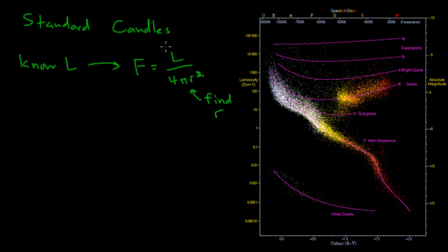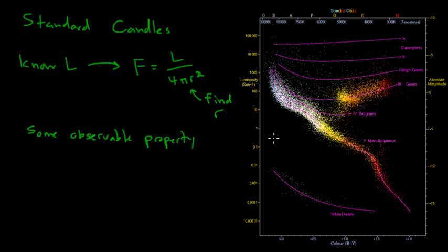So this is the basic method that is used for pretty much all standard candles. We have to start with some sort of observable property — so some observable property. In this case we used the colors of various stars, but we're going to see different examples in the next few videos. We have some property that we can measure from whatever our standard candle is, and we need to be able to relate that to the luminosity of that object. And once we have the luminosity, we can use that to calculate the distance to the object itself.